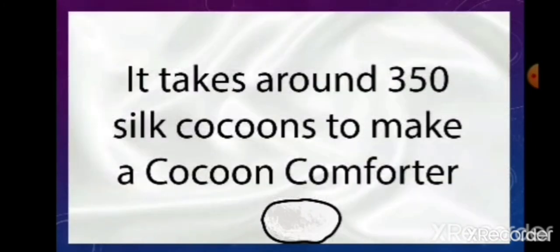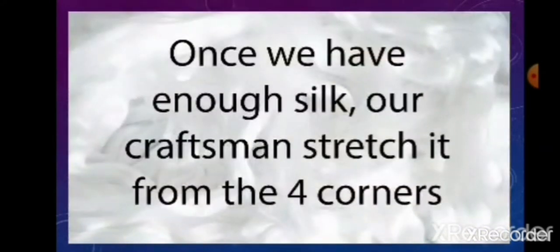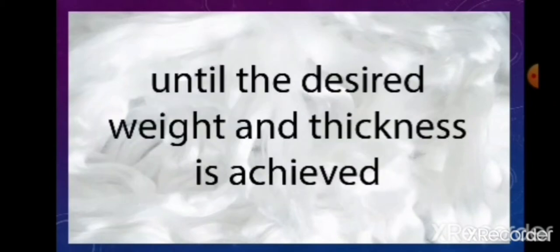Step 4: it takes around 350 silk cocoons to make a cocoon comforter. Once we have enough silk, our craftsmen stretch it from the four corners until the desired weight and thickness is achieved.